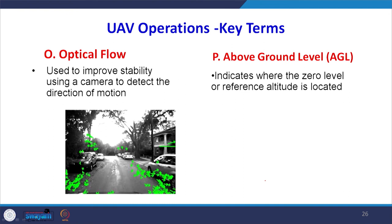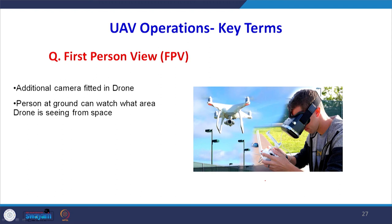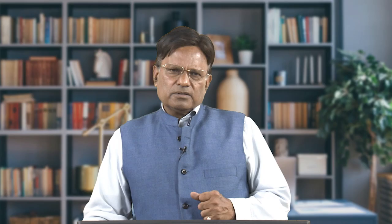AGL (above ground level) indicates how high the aircraft is flying above the ground. Optical flow improves stability by using a camera to detect the direction of motion of an object. First person view (FPV) is important — an additional camera fitted in the UAV allows the operator to see what the UAV is looking at in real time. It is not like a black box; a real-time scenario is created where you can see what data the UAV is collecting.